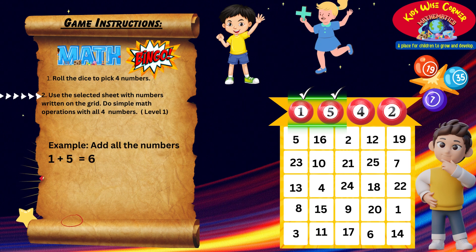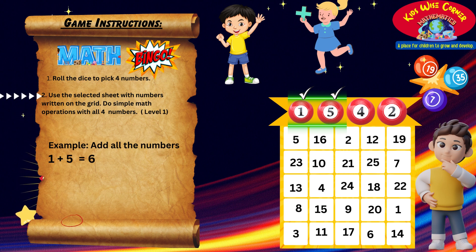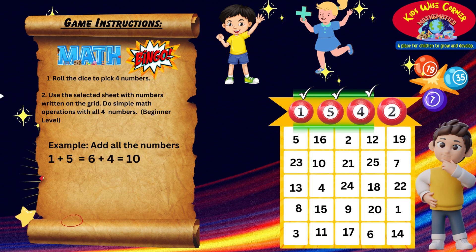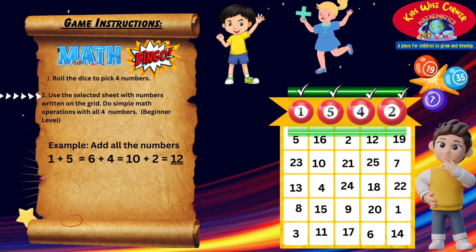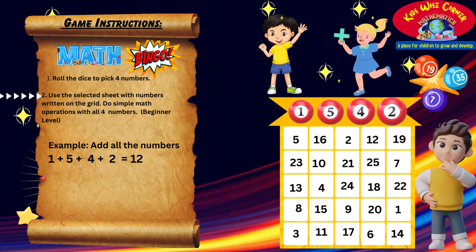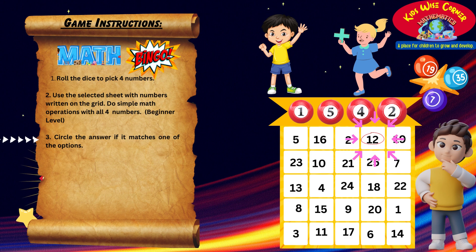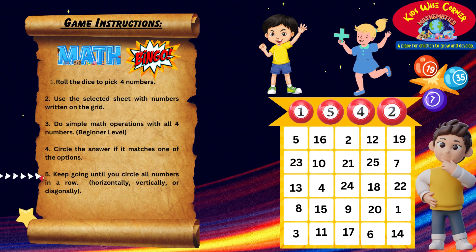I'll show you an example. Let's add the numbers: one plus five equals six. Then we add four, so six plus four equals ten. Finally, add two to get twelve. If we look for twelve on the grid, we find it in the top row. Circle the number on the grid if it matches one of our answers.